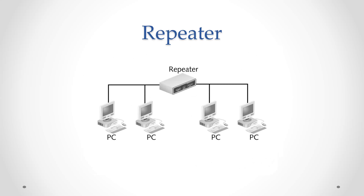When signals are sent over long distances they suffer attenuation or signal loss. Repeaters are devices which are added to a transmission system to boost the signal so it can travel greater distances. They amplify signals on both analog (like copper cable) and digital (like fiber optic cable) communication links. Repeaters can also be used on wireless systems.